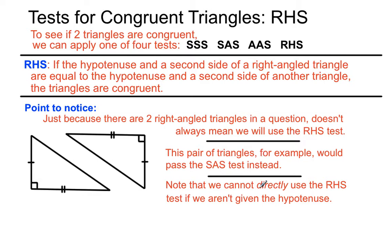Now, I'm saying that we can't directly use the RHS test because students who are really on the ball here might suggest that if we had the numbers for this side and this side and this side, we could use Pythagoras to show that the hypotenuse are, in fact, equal on each of those triangles. And we might be able to then use the RHS proof, but it would be certainly easier and quicker in this case to use the SAS test instead.